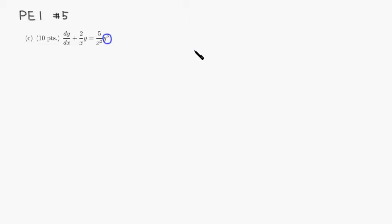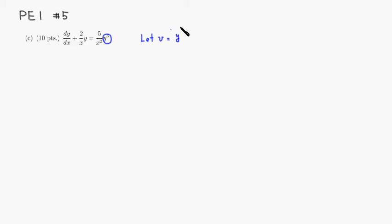What we can do is try to turn this into a linear equation. The substitution is: let v equal y to the power (1 minus n). Here n is 3, so 1 minus 3 gives us negative 2. So v = y^(-2).